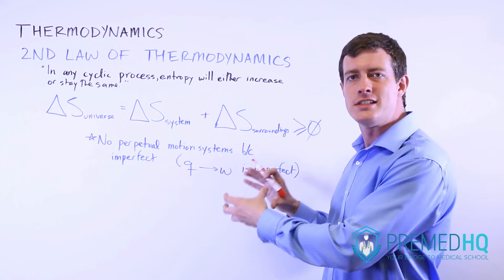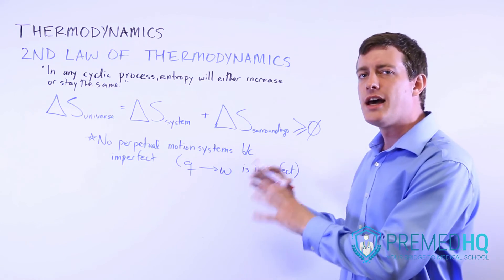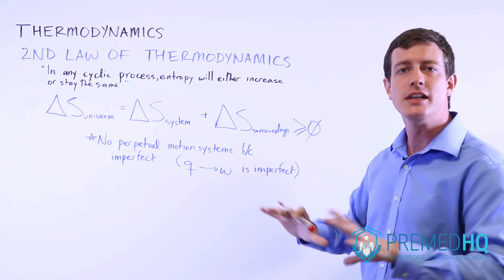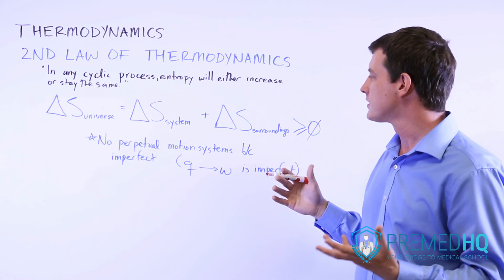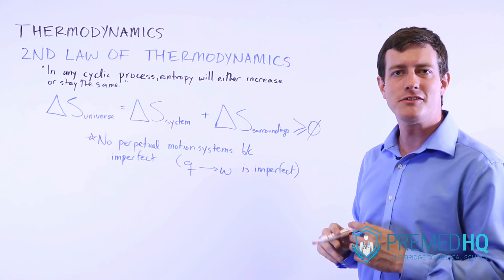If a system sees a decrease in entropy or a decrease in its disorder, that must mean that the surroundings have an increase in their disorder, which is represented by a positive delta S, a positive change in entropy.